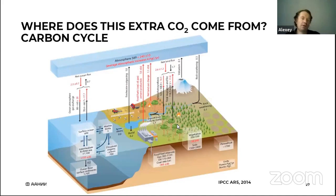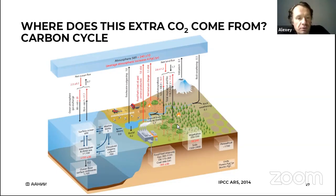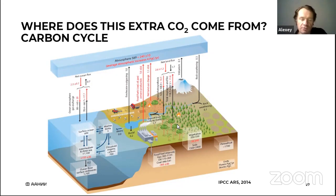It is a scientific fact that the present-day concentration of CO2 is abnormal. But could it be natural in origin? To answer whether it is of human origin, we need to look at the carbon cycle of our planet.